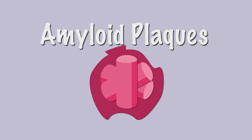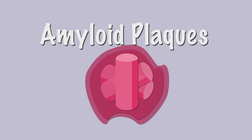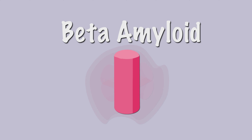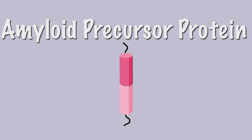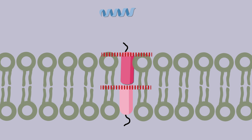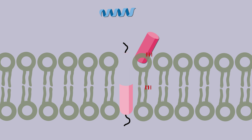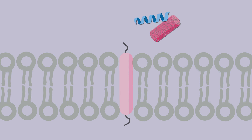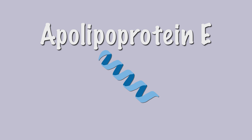Meanwhile, amyloid plaques are made of a protein called beta-amyloid, a part of the larger amyloid precursor protein. Beta-amyloid is cut from amyloid precursor protein and degraded outside the cell. This process is facilitated by apolipoprotein E, or APOE, which helps break down beta-amyloid.